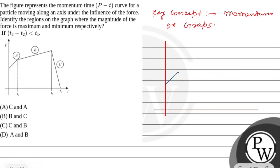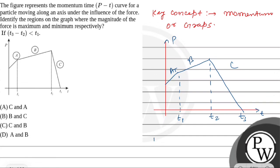The question gives us points A, B, and C on the graph. The time coordinates are T1, T2, and T3, and we also have momentum coordinates. The question asks for maximum and minimum force. We know the relation between momentum, time and force: F equals dp by dt, that is, rate of change of momentum is force.